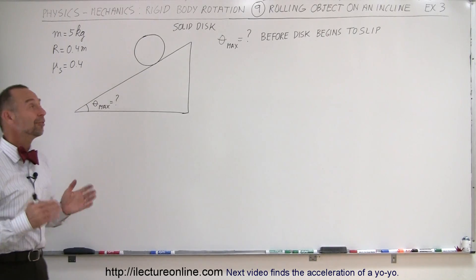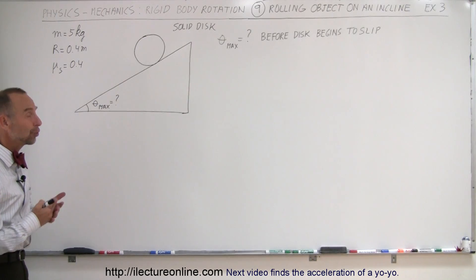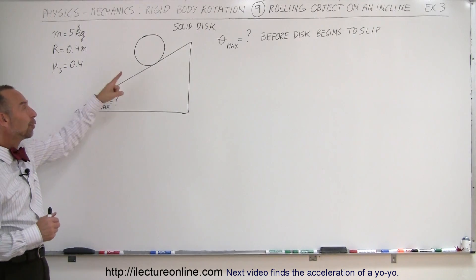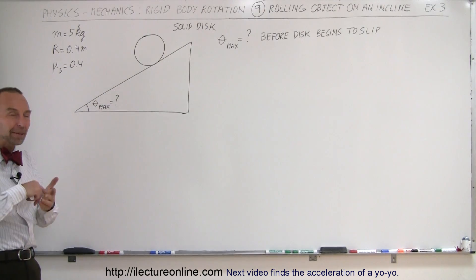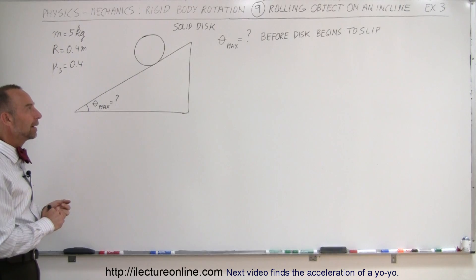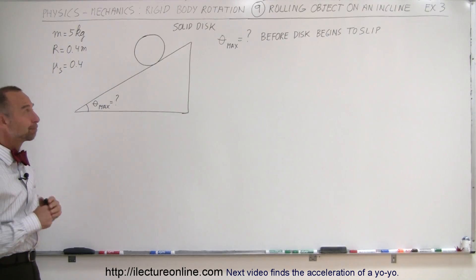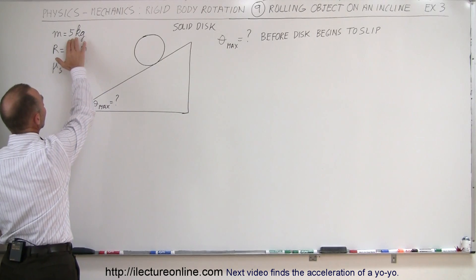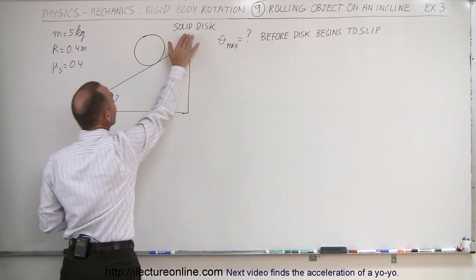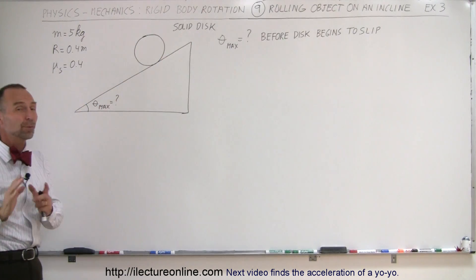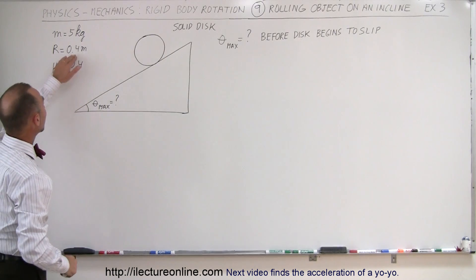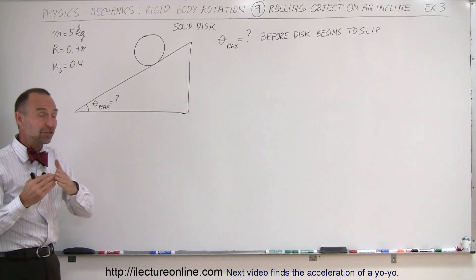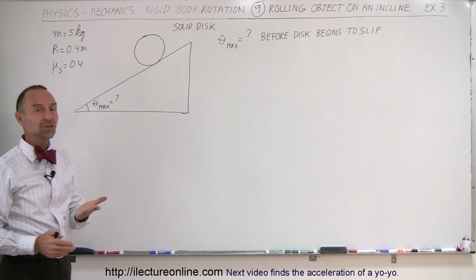Welcome to our lecture. In this video I'm going to show you how to calculate the maximum angle of the incline before the disc begins to slip instead of roll. The mass of the disc is 5 kilograms, it is a solid disc so the moment of inertia is one-half mr squared, the radius is 0.4 meters, and the coefficient of friction between the incline and the disc is 0.4.